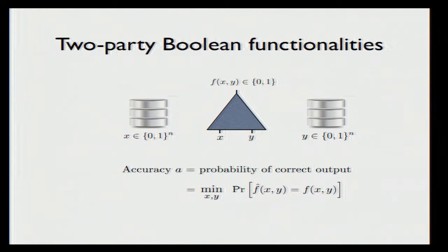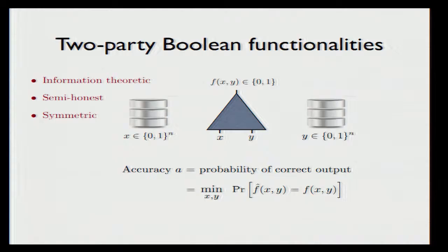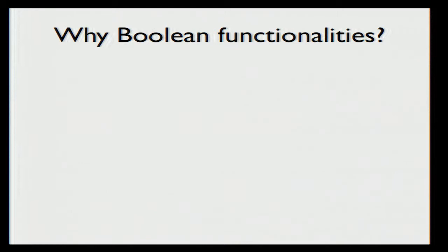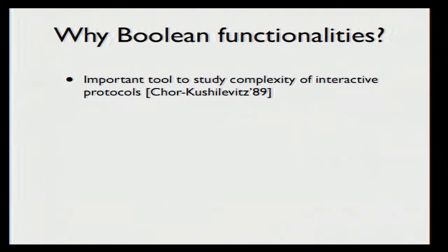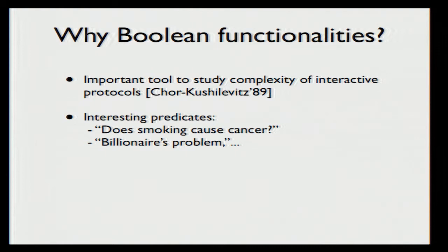As far as the model of computation is concerned, I'm going to focus only on the information-theoretic case. We assume the parties are semi-honest, meaning they follow the protocol instructions and do not deviate from it. The functionality we consider is symmetric, meaning both parties must receive the same output. Why Boolean functionalities? Well, they provide a very clean abstraction to study, and they have been used in the literature many times for understanding the complexity of interactive protocols, starting from the work of Chor and Kuschelevitz. Although they might be limited in applications, many privacy questions can in fact be formulated as predicates — for example, does smoking cause cancer?